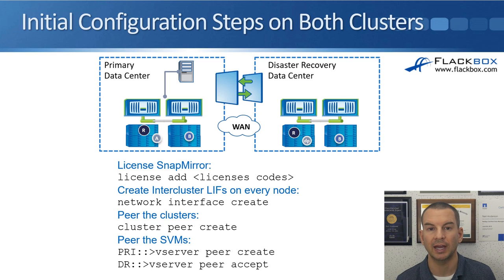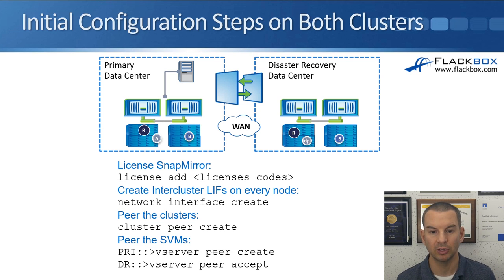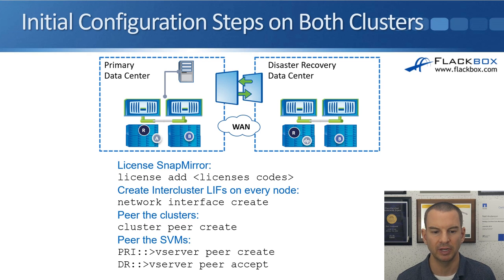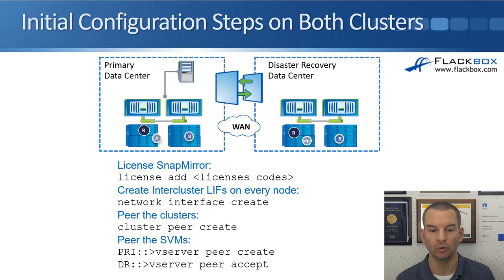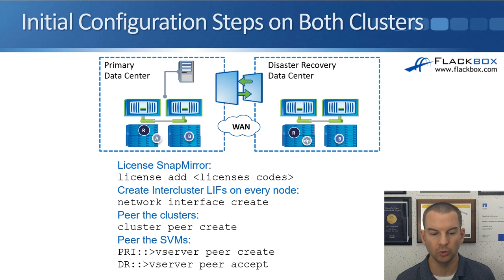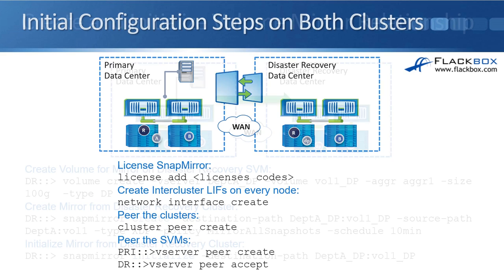Let's look at how to actually configure this. First we need to do our initial configuration steps. Make sure that you've got SnapMirror licensed on both clusters, then create your inter-cluster LIFs — you need one on each node. Peer the clusters and then peer the SVMs. For more detail on that check the previous lectures.